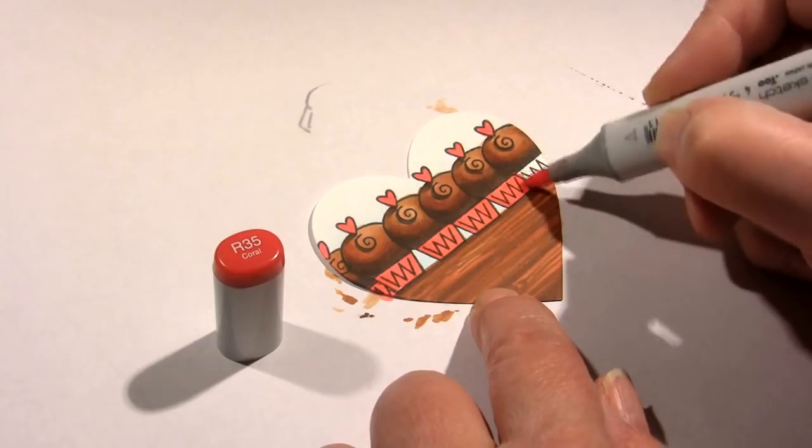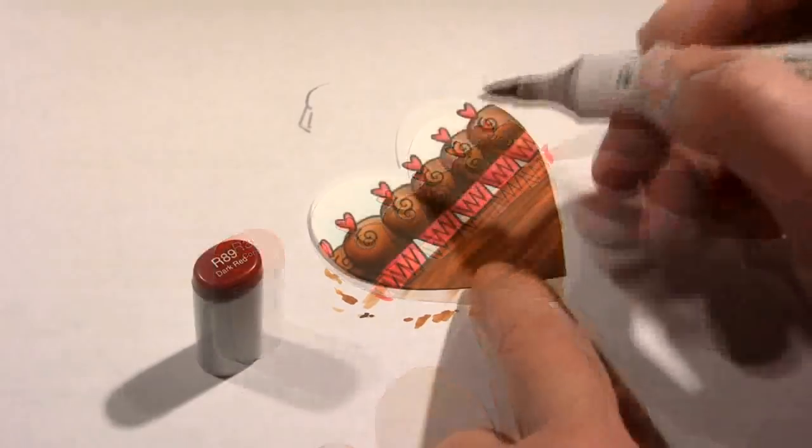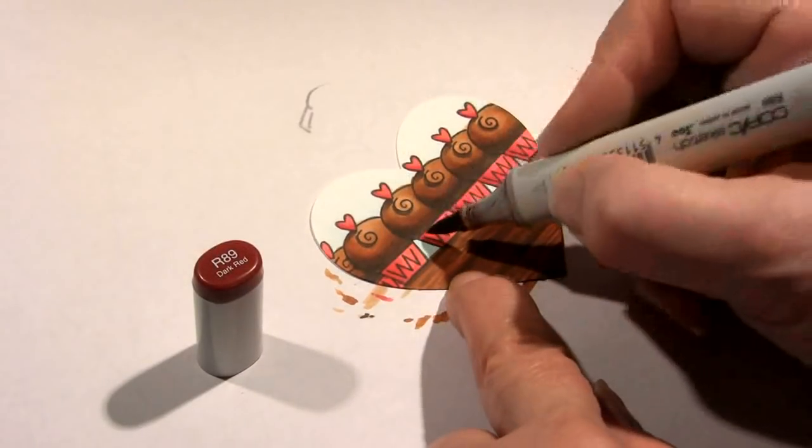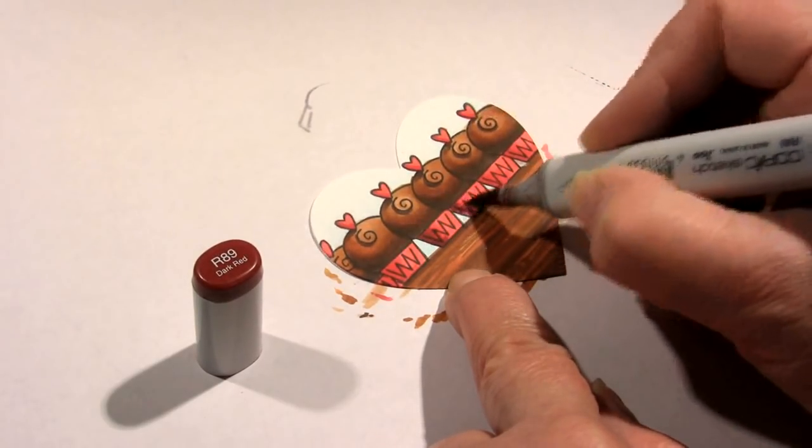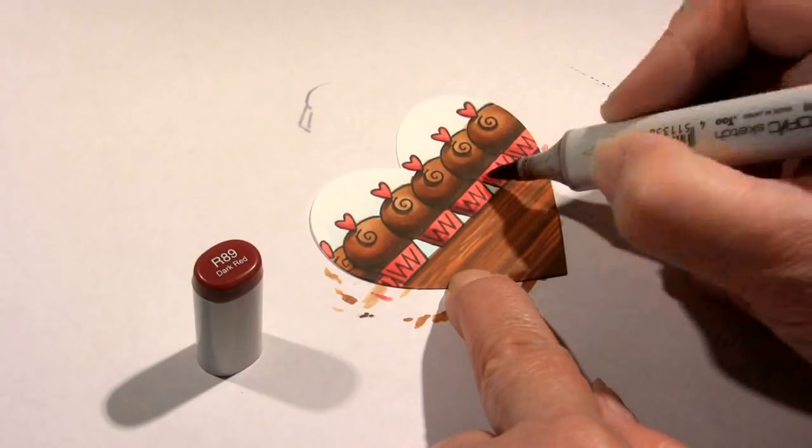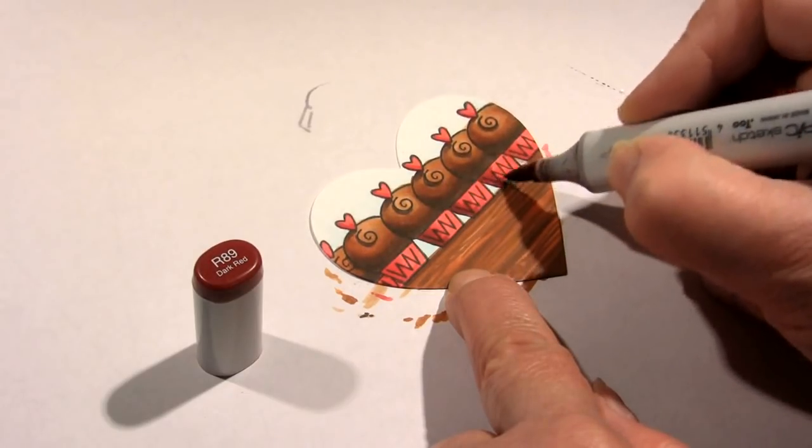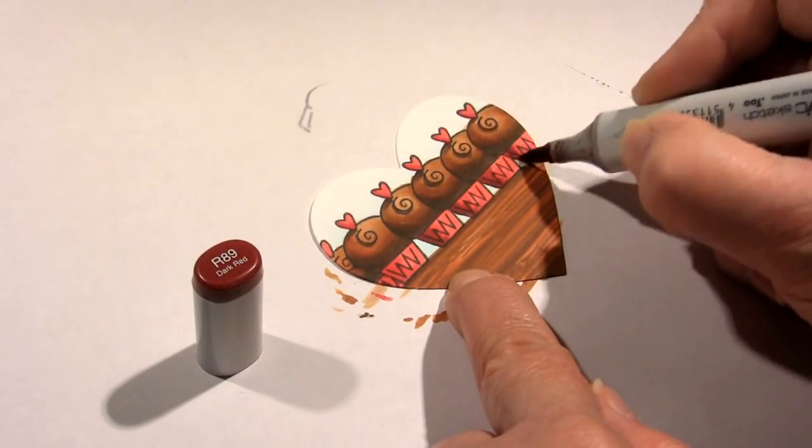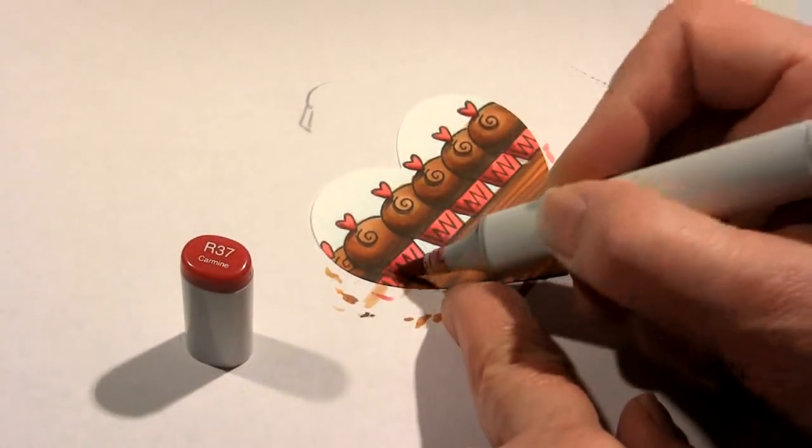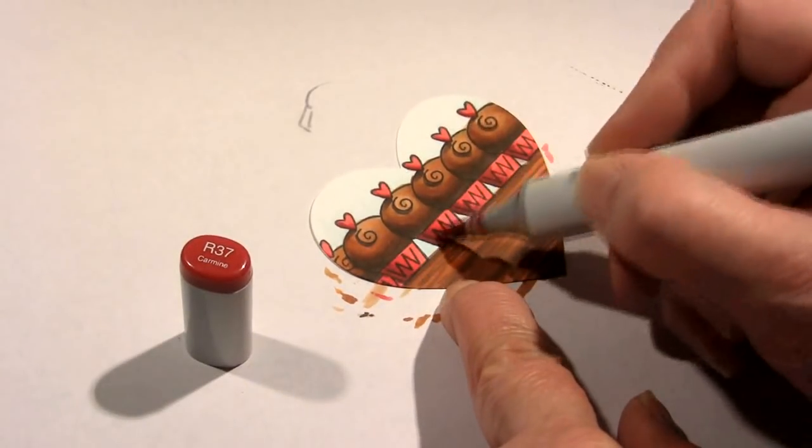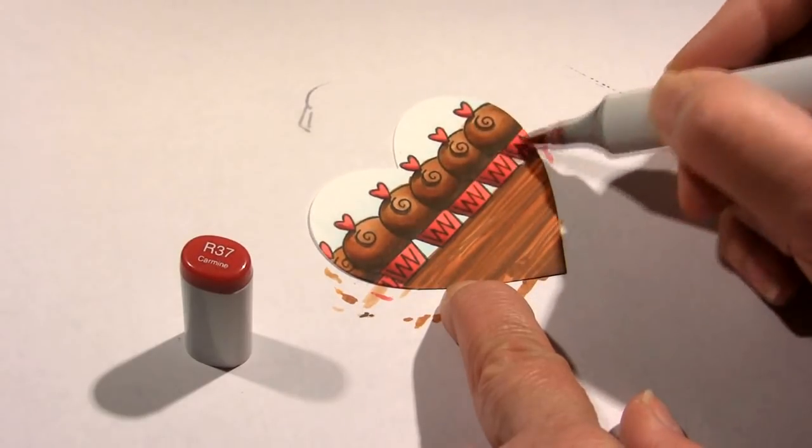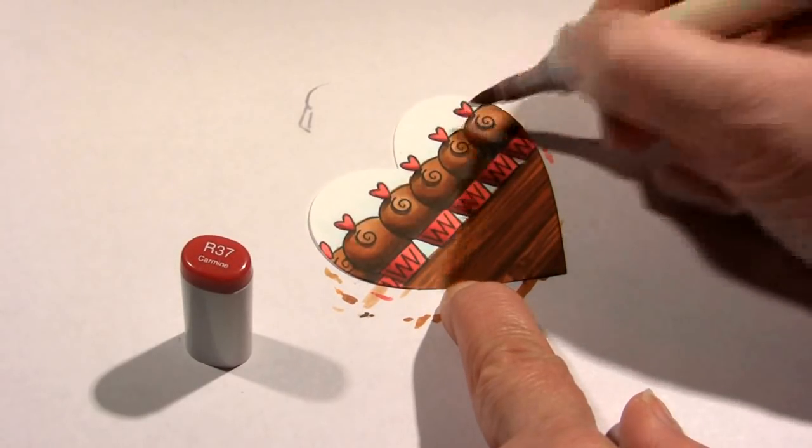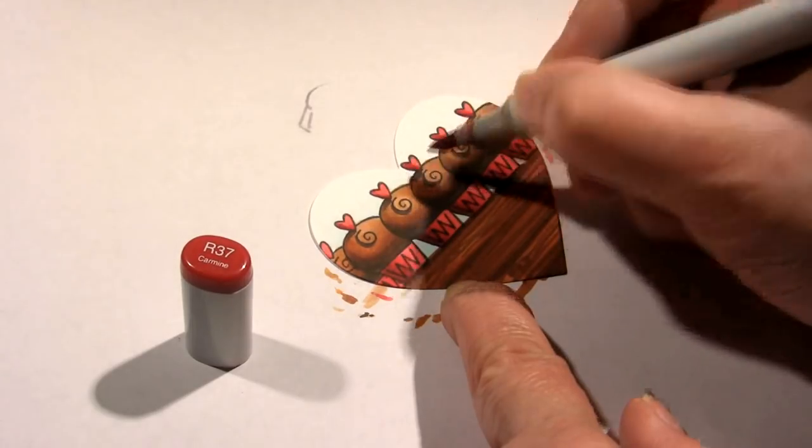R35 is the base color now for the cupcake bottoms and for the little hearts on top. I'm adding the shadows with R89, just doing them on the left-hand side with real short strokes. Then I'll blend that out a little bit with R37, and if you end up with a harsh line, you can go back in with the R35 again. We're pretty close to done on the coloring portion.